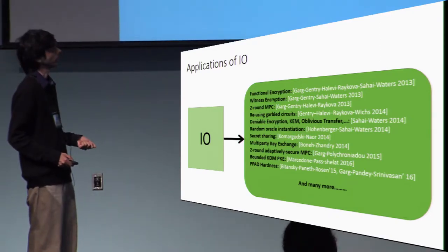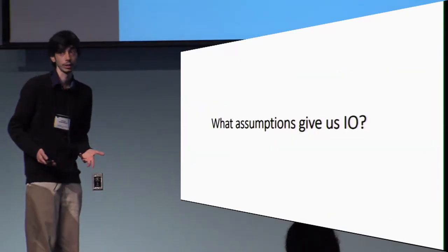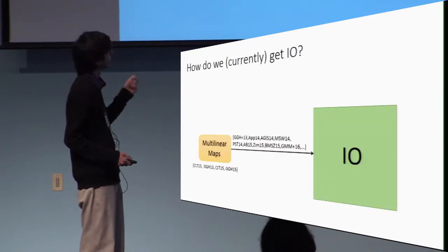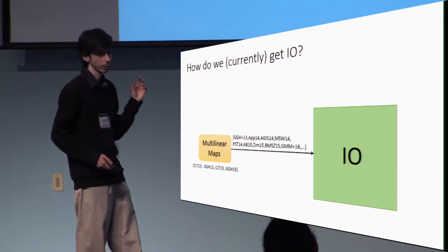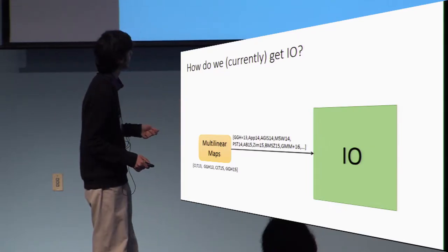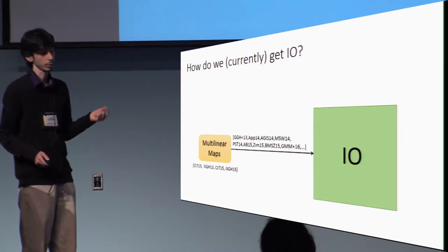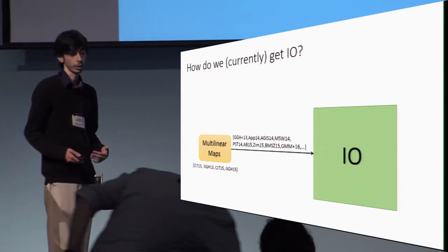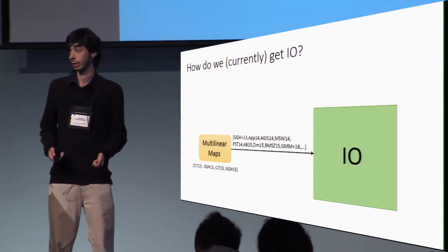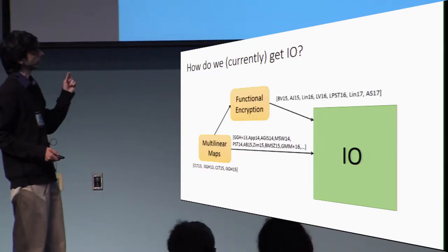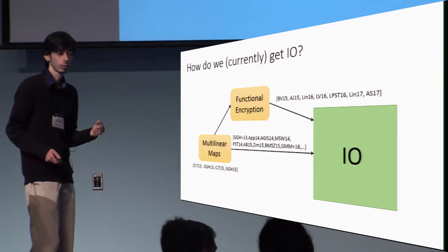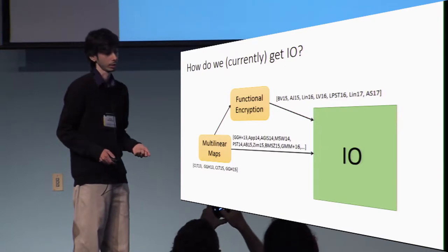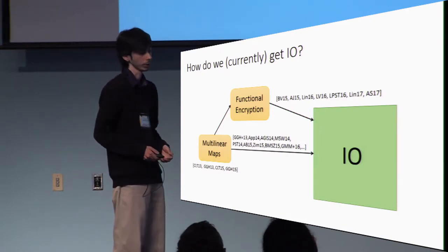Given the usefulness of I.O., one natural question to ask is what assumptions could give us I.O. We have two main ways to get I.O. at the moment: the first being from multilinear maps, initiated by Garg et al. in 2013, with a series of works showing either improved constructions or weakened assumptions. The alternative way to get I.O. is through some form of functional encryption, though all known constructions of this kind are also built using multilinear maps.